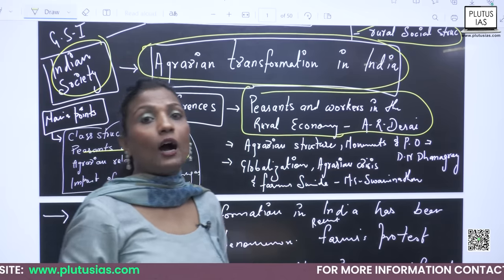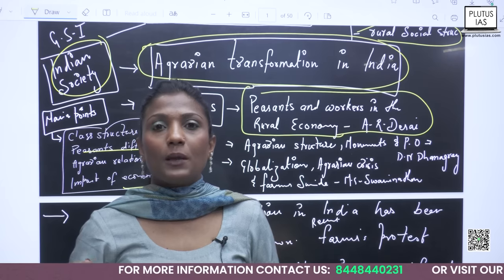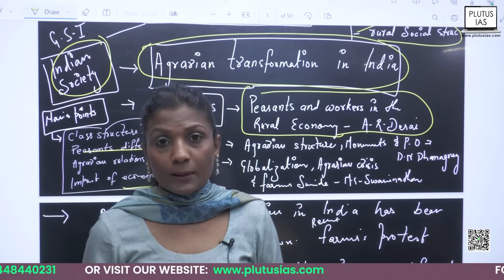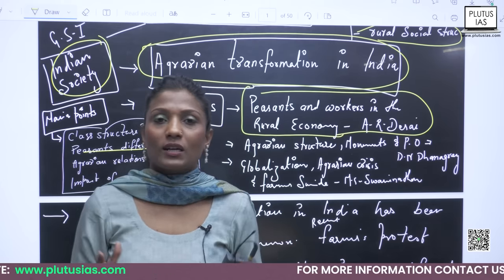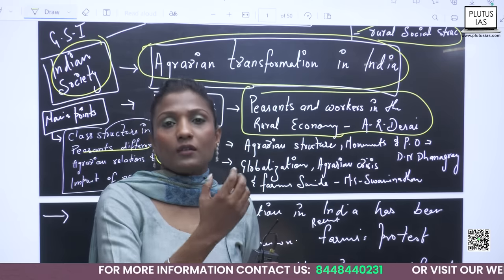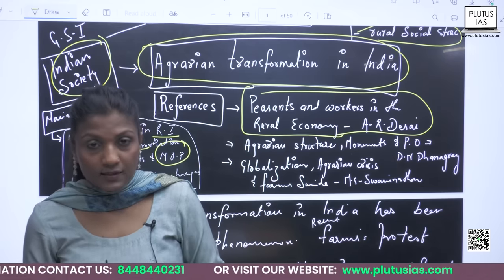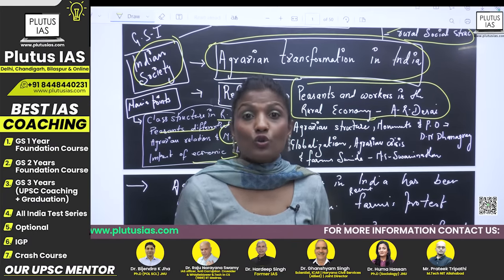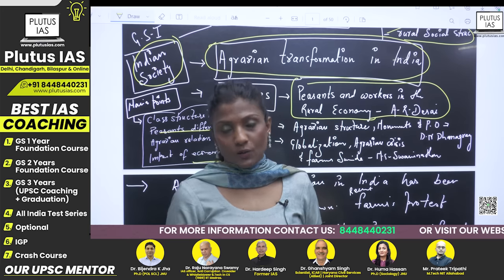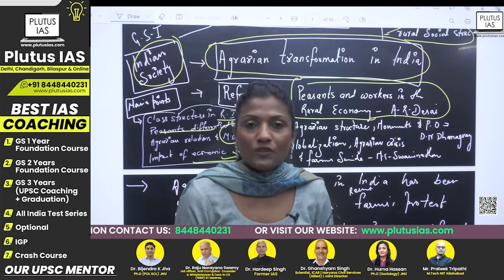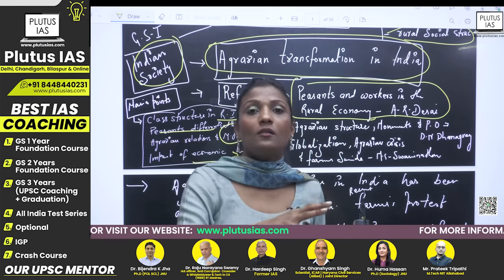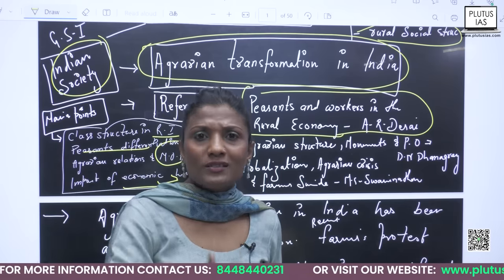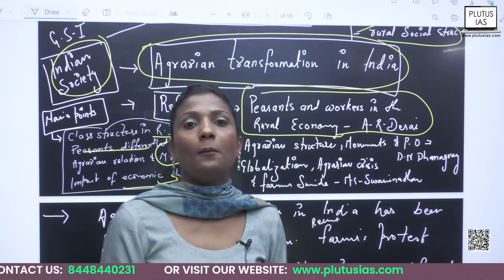A.R. Desai explains in his book how we have peasant differentiation — peasants may be rich farmers, middle class farmers, or poor farmers. Now here you need to talk about the fact that even in Punjab or Haryana, we do have small and marginal farmers. There are some people in the rural economy who are very important to support. When you relate to small marginal farmer issues, you can refer to reports and data to support your answer.